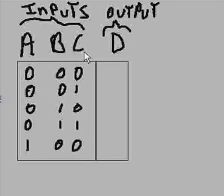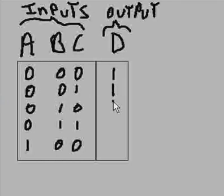So we have A, B, C inputs and a D output. And our outputs are all alike except for one — 1, 1, 1, 1, and a 0.